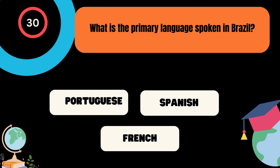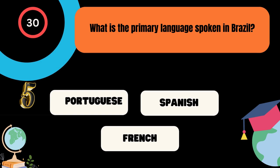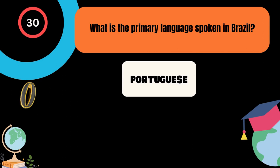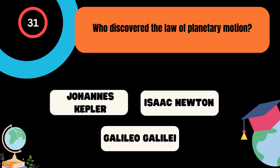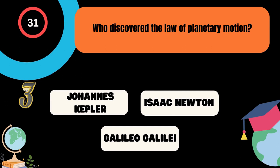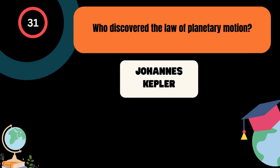What is the primary language spoken in Brazil? A. Portuguese, B. Spanish, C. French. And the correct answer is Portuguese. Who discovered the law of planetary motion? A. Johannes Kepler, B. Isaac Newton, C. Galileo Galilei. And the correct answer is Johannes Kepler.